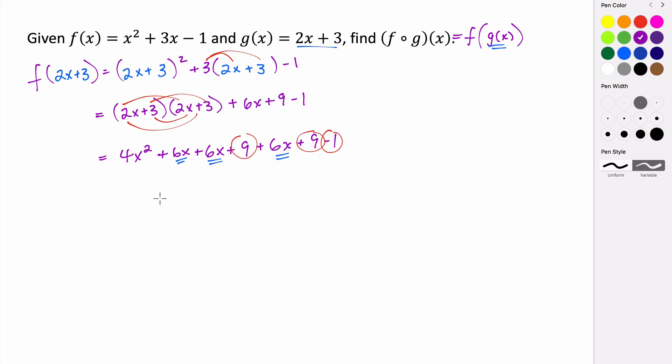So if we're looking at f of g of x, f of g of x is equal to, we have 4x squared, 6x plus 6x is 12, plus another 6x is 18x, so plus 18x, and then 9 plus 9 is 18, minus 1 is 17.